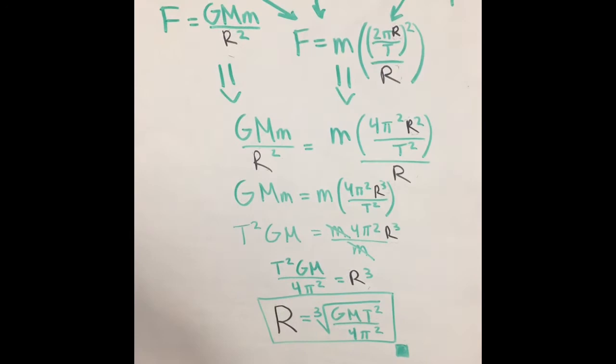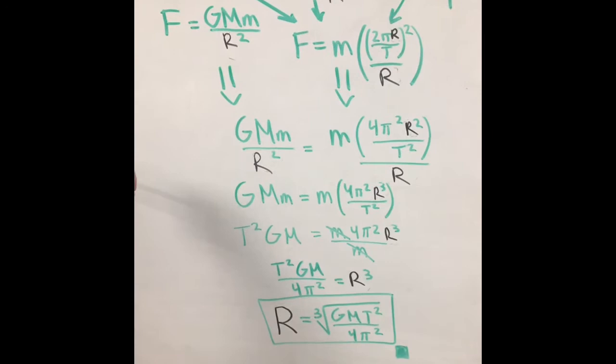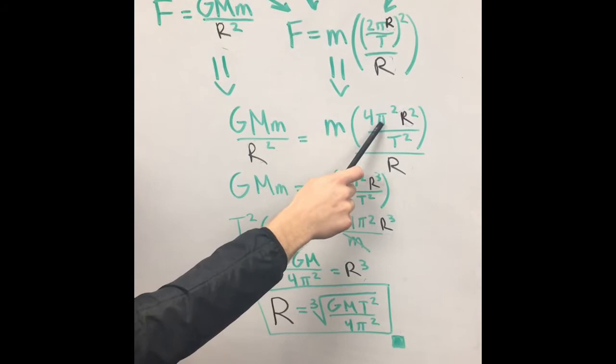So previously we found out that force is equal to mass times acceleration, acceleration equals velocity squared over r, and v equals 2 pi r over t. When we compile all of these equations and set them equal to each other, we are left with big G times big M times little m over r squared equals m times 4 pi squared r squared over t squared, all over r.